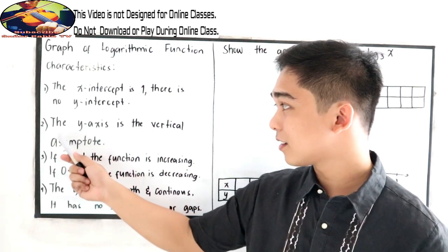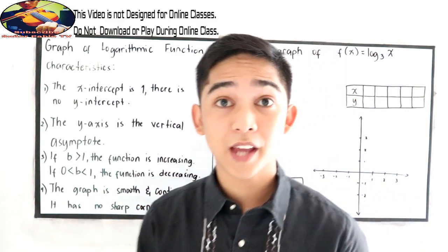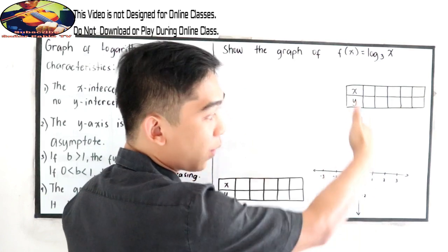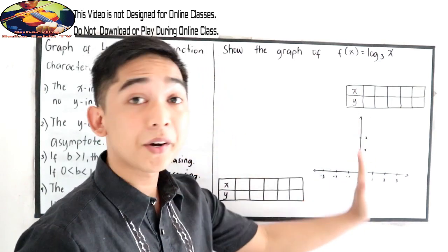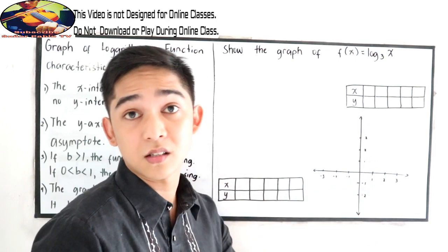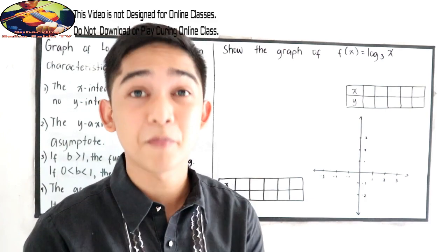Second, the y-axis is the vertical asymptote. When you say asymptote, the vertical or the y-axis, that means our graph does not touch the y-axis. It just goes closer and closer to y-axis but they will never meet.